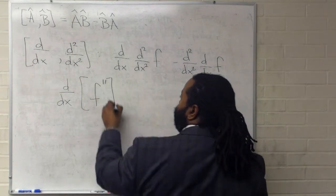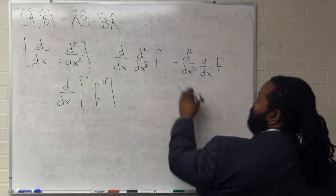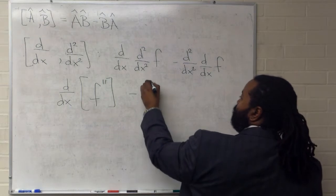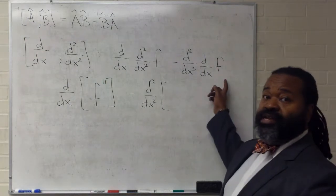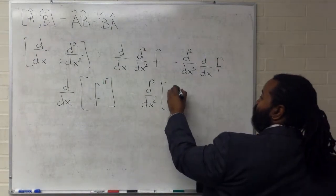That's going to give us F double prime for the second derivative, minus, in this case we leave operator B out, and show the result of operator A acting on the function. That's going to be F prime.